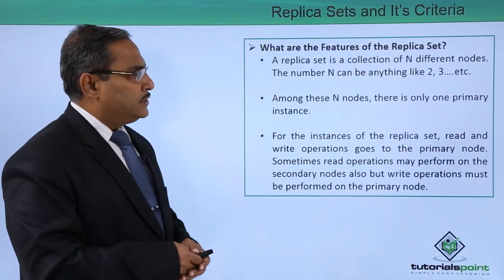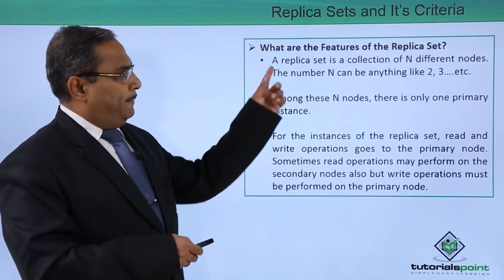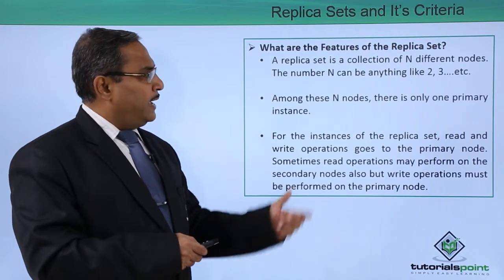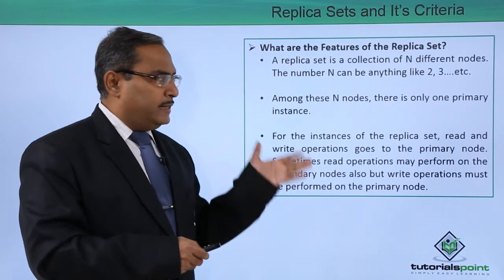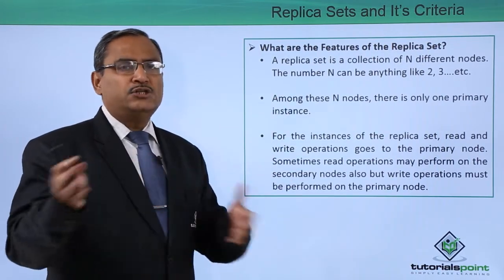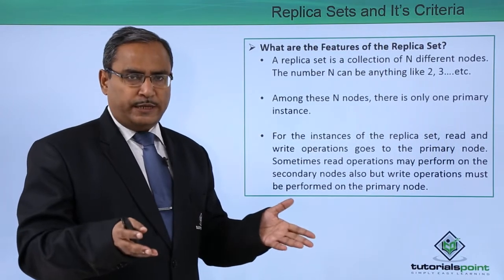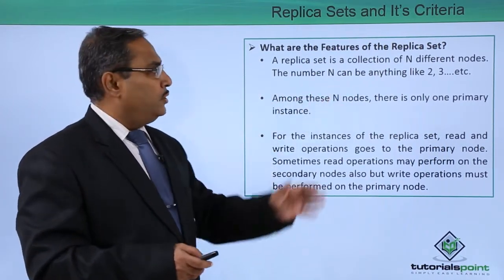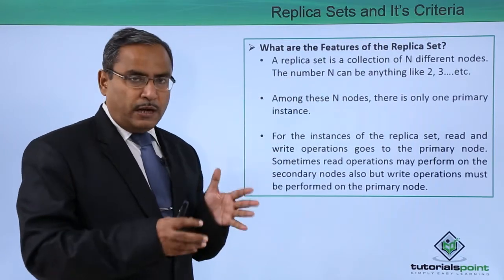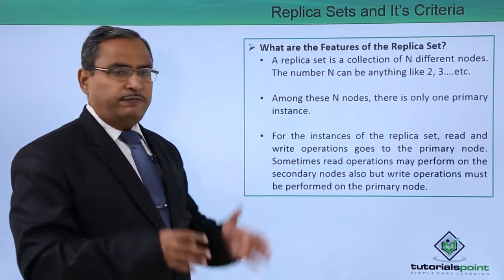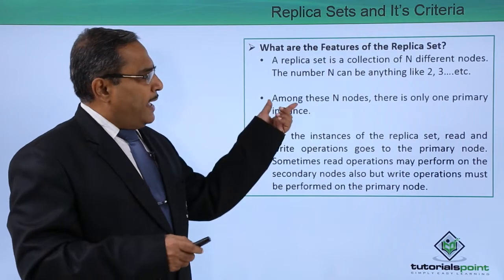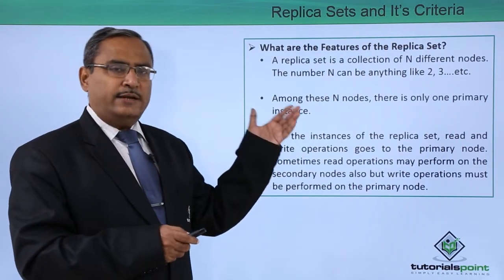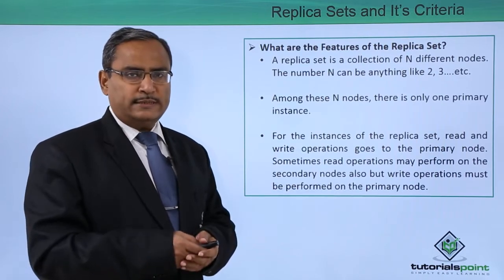What are the features of the replica set? A replica set is a collection of n different nodes, where n can be 2, 3, or more — so at least 2 nodes must be present. Among these n nodes, only one node will be the primary instance and the remaining n minus 1 nodes will be secondary instances.